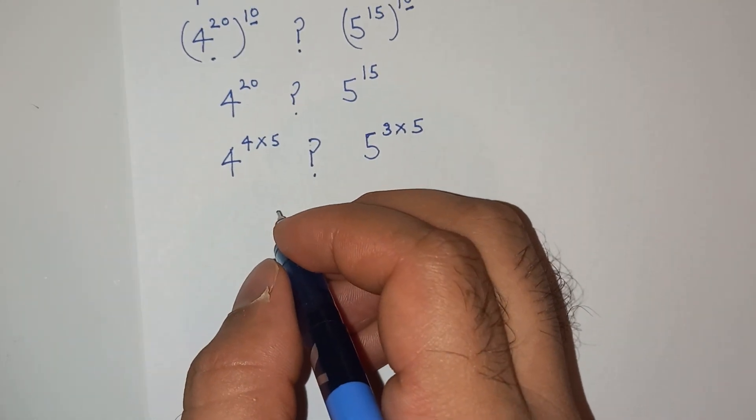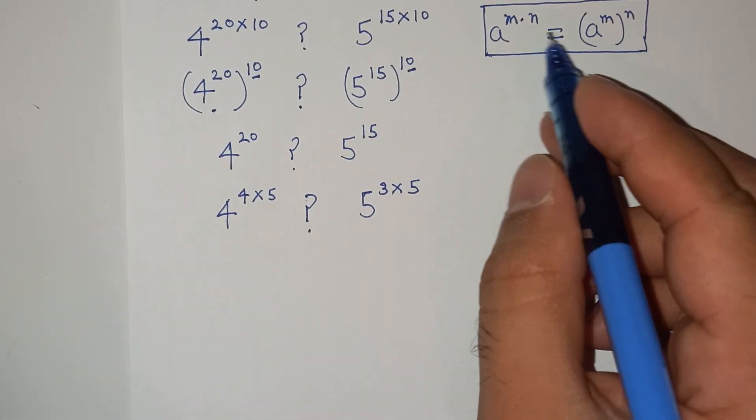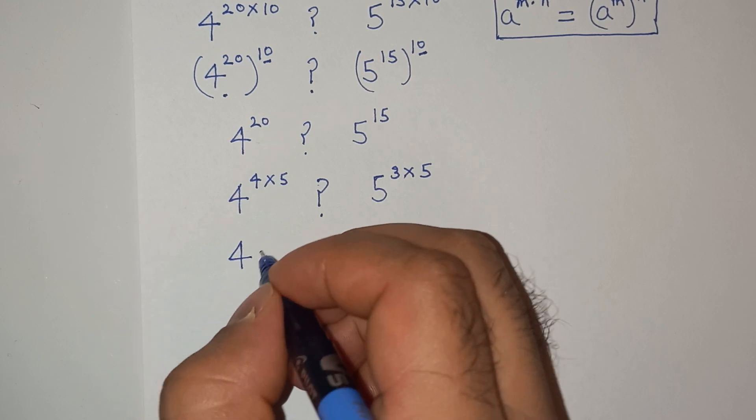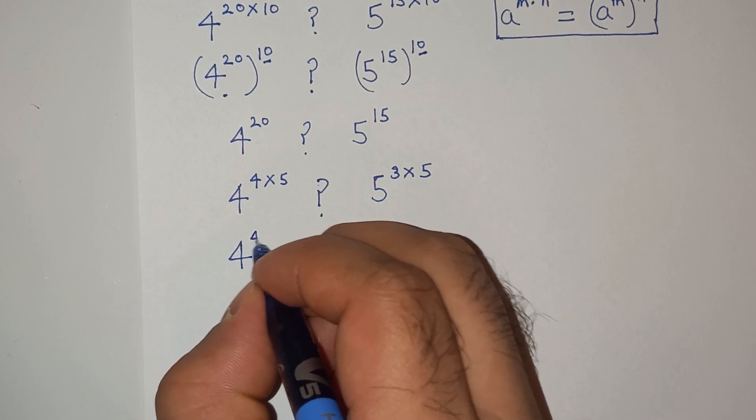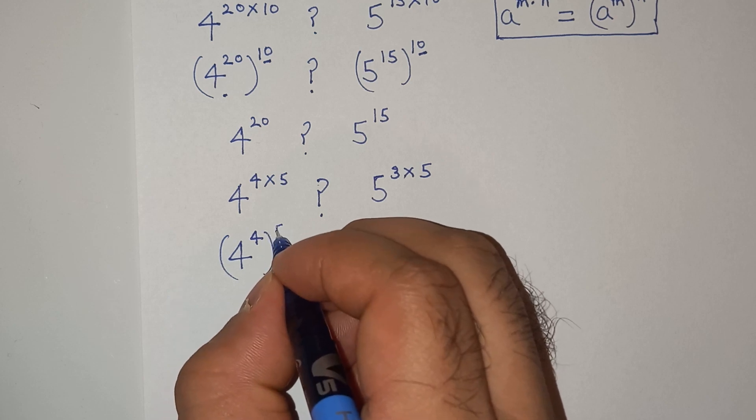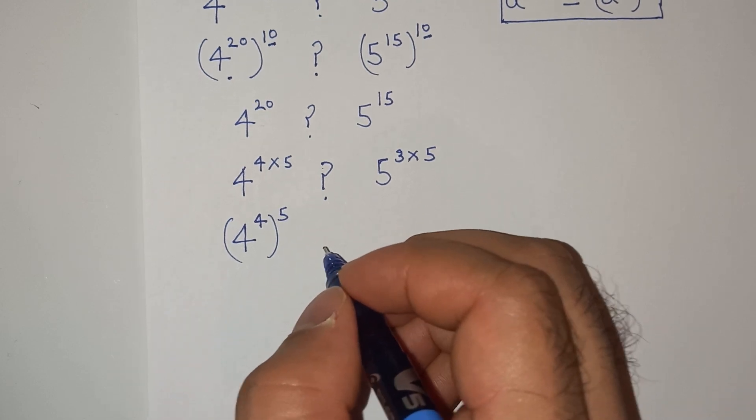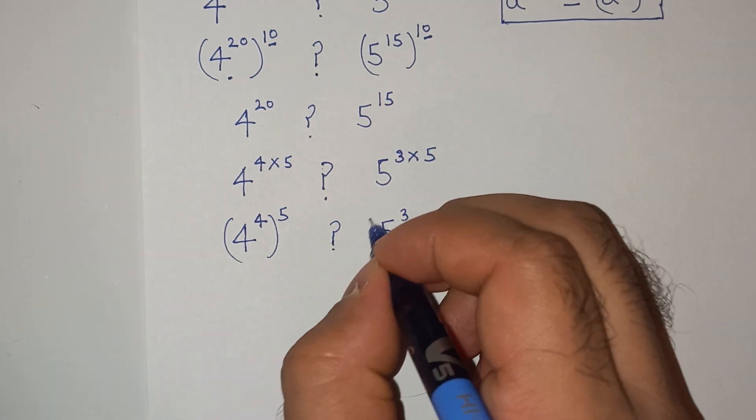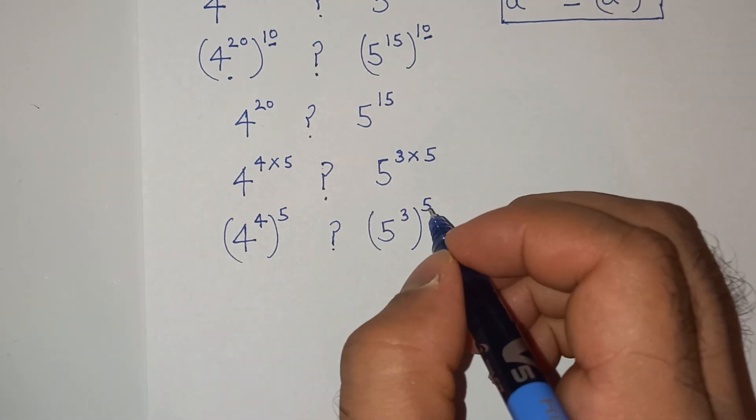Now again we will apply the same exponential rule. So this can be written as 4 power 4 bracket power 5, and this will be 5 power 3 power 5.